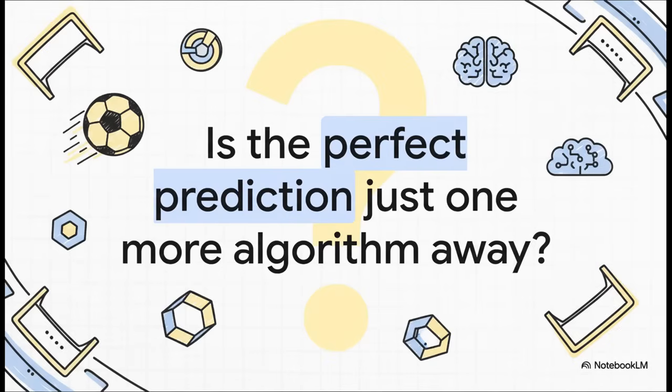We've just seen an AI nail a result with tactical precision and then learn from its near misses on the next one. It really makes you wonder. With every match, every goal, and every new piece of data it absorbs, is the perfect sports prediction really just one more algorithm away? Something to think about.